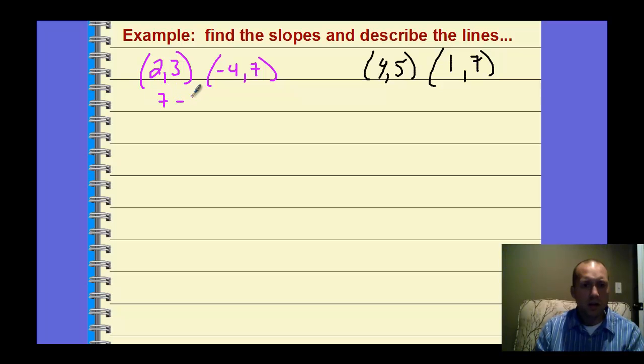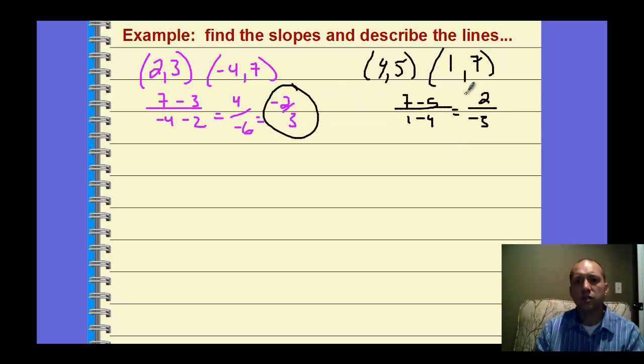To find the slope of the purple points here, we do 7 minus 3 over negative 4 minus 2. So then 7 minus 3 is 4, over negative 4 minus 2 is negative 6. So we have negative two-thirds. We find the slopes of the black points, the line going between these two points, 7 minus 5, and 1 minus 4. We have 7 minus 5 is 2, over 1 minus 4 is negative 3, so we have negative two-thirds. So here we have negative two-thirds, and negative two-thirds.